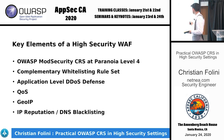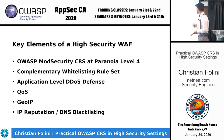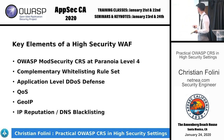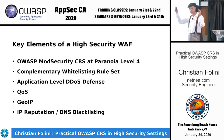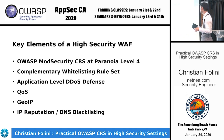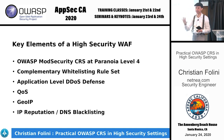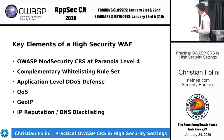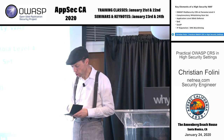Summing up — what are the key elements of a high security web setup? You want CRS at paranoia level four, tuned down to zero — a well-tuned WAF setup. You want a complementary whitelisting rule set, possibly around the complete application, but at least a partial whitelist for the parts where this is viable. You want application-level DDoS defense, QoS, et cetera, plus geoIP and IP reputation.